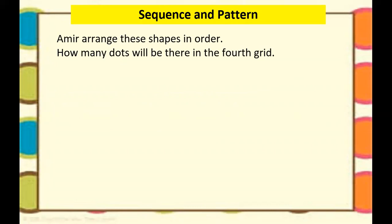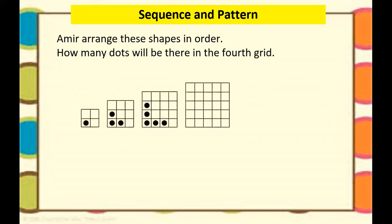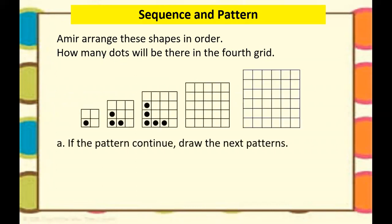I'm going to give you an example here. Amir arranged these shapes in order. How many dots will there be in the fourth grid? In pattern one we have one dot. The next pattern, we have three dots. And the third pattern is five dots. What do you think will be the next? You can write here: one, three, five. So what do you think will be here?